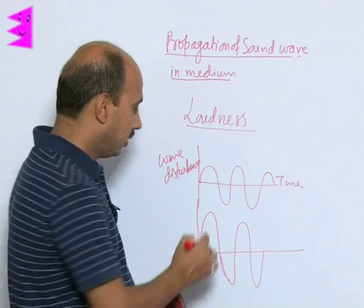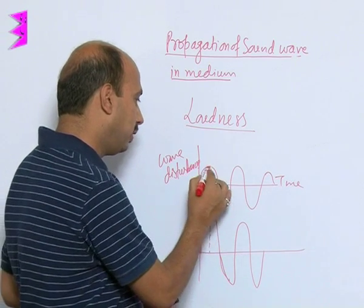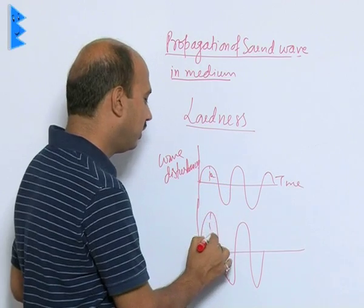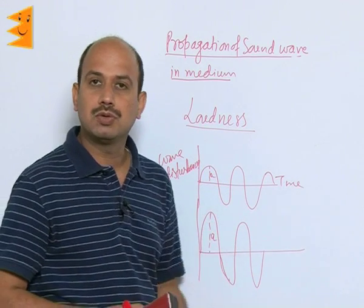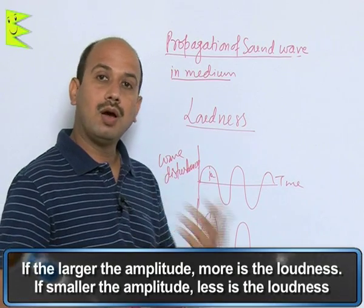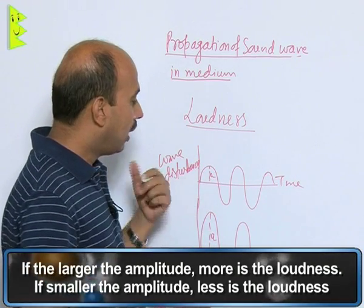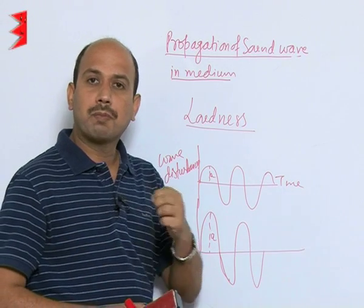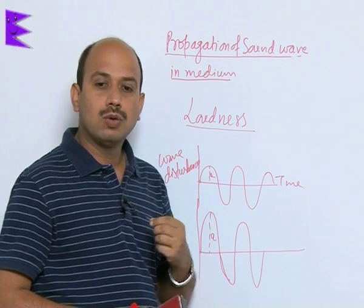Here this has got large amplitude, this has got less amplitude. Loudness is represented by amplitude. Larger the amplitude, more is the loudness. Smaller the amplitude, less is the loudness. If you are speaking very softly, this sound only travels to a certain distance because it has got less energy.